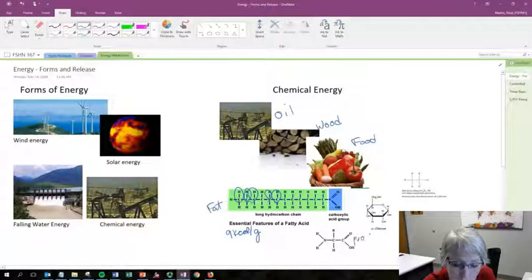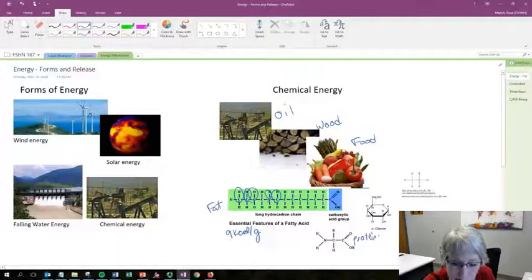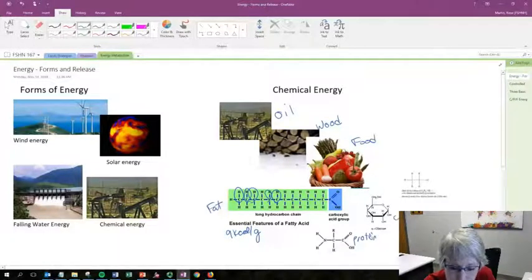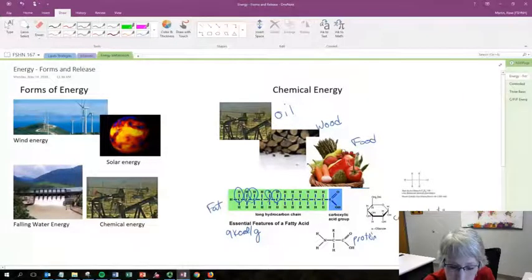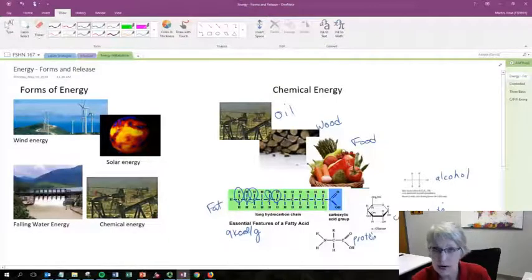If we compare that to our protein molecule, here's an amino acid. This is glucose, so this is a carbohydrate molecule. And here's alcohol, this is ethanol, so it's an alcohol molecule. They have fewer calories per gram.